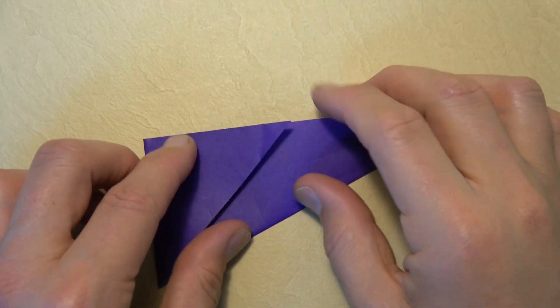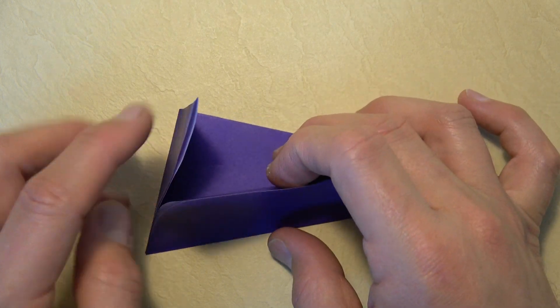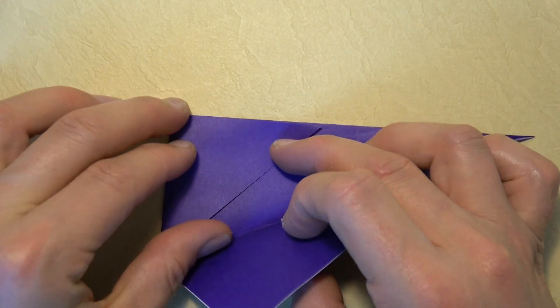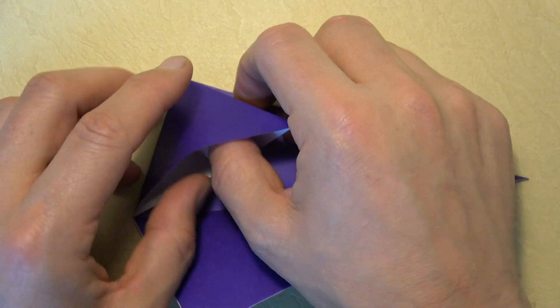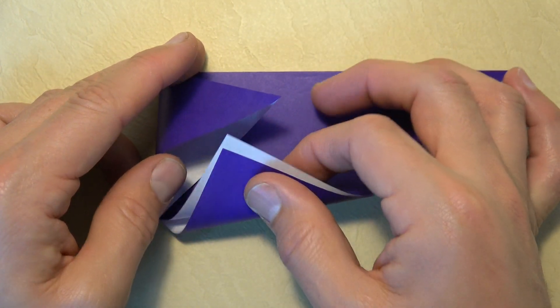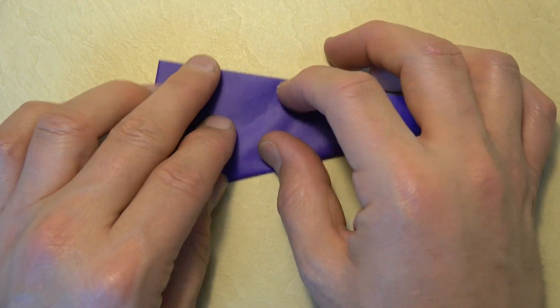And let's rotate and let's unfold these two flaps. We can leave this one folded and open the pocket. And let's stick these two flaps into the pocket. And flatten.